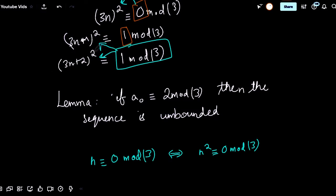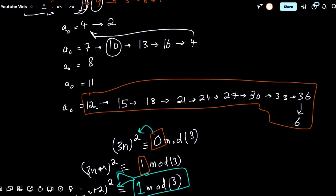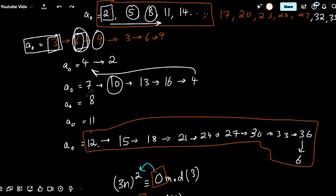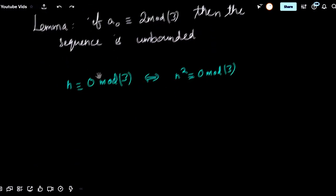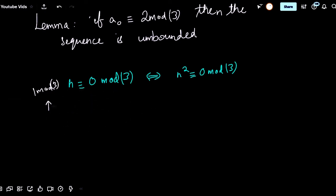For 1 mod 3 numbers: if taking a square root lands at 2 mod 3, we know by our lemma the sequence becomes unbounded. For example, 25 is 1 mod 3 — its square root is 5, which is 2 mod 3, so the sequence grows forever. So perhaps for a0 ≡ 1 mod 3, we can prove that the sequence eventually reaches a number that's 2 mod 3.